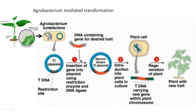You can ligate the gene of interest with the Ti plasmid and introduce this recombinant Ti plasmid into the plant cell or plant tissue by tissue culture. The T-DNA carrying the new gene integrates within the plant chromosome, because it has the capacity to integrate with the host genome. Your gene of interest is also integrated into the plant cell. For example, if you introduce a Bt gene into a cotton plant, you can use this Ti plasmid, and all parts of the plant will now produce Bt toxin. That is the beauty of this Ti plasmid.